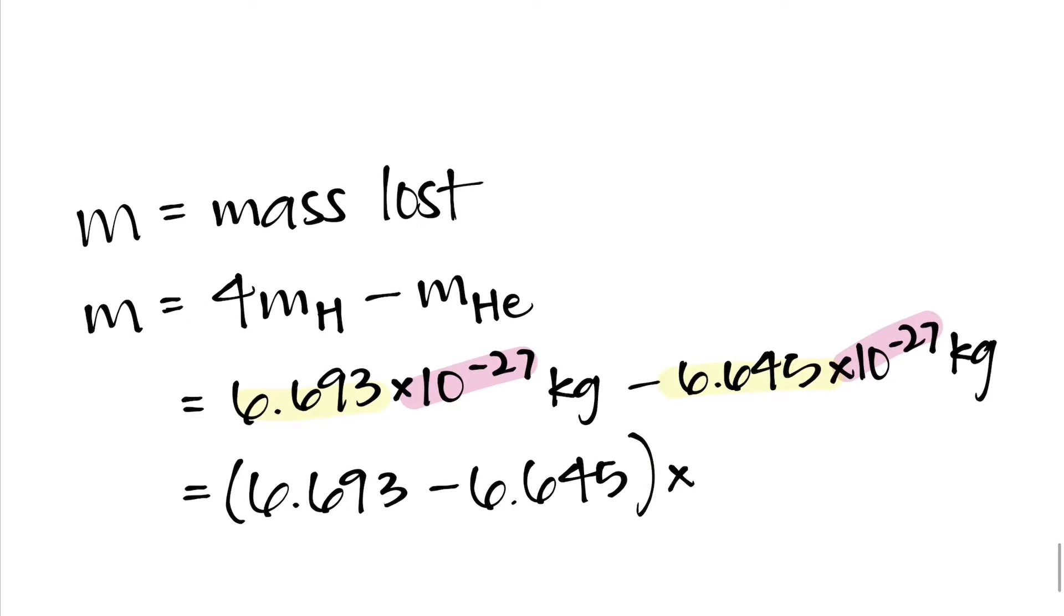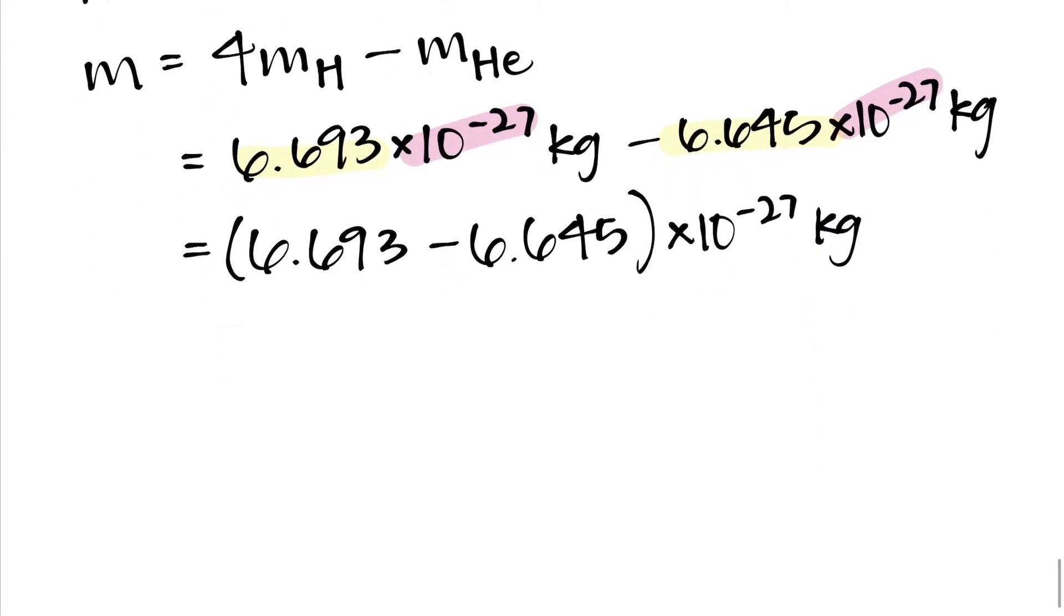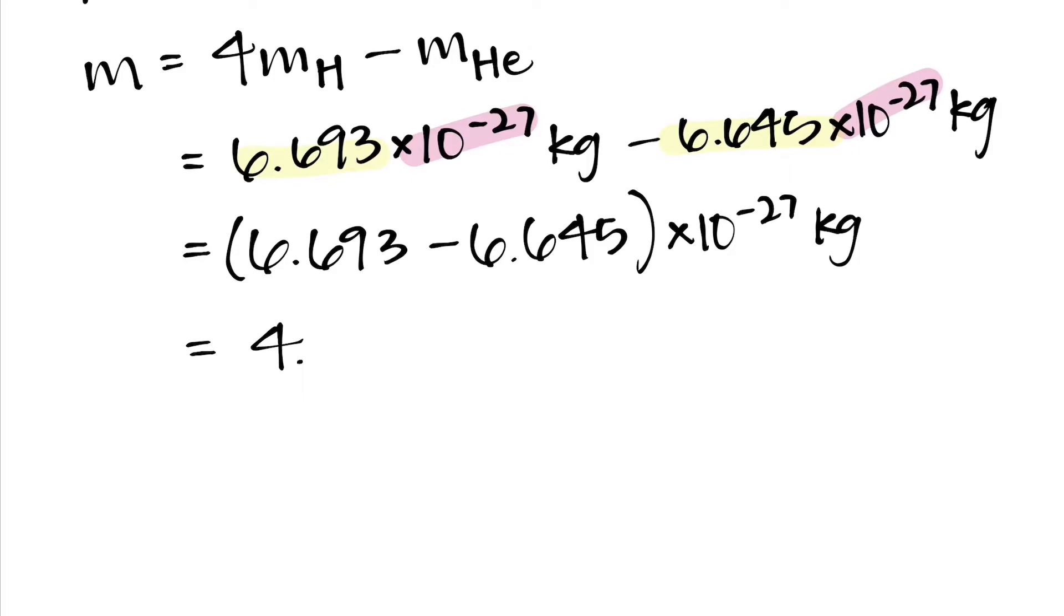So the math is a little bit easier, or just have your calculator do it anyway. 6.693 minus 6.645 times 10 to the power of negative 27 kilograms gives us a mass of 4.8 times 10 to the power of negative 29 kilograms lost in the fusion process. This number is on the order of magnitude of being 100 times smaller than either of the two constituent masses of hydrogen or helium. So it's a really tiny amount of mass that's lost.